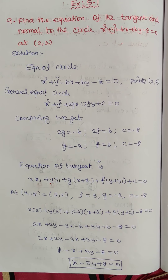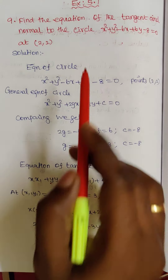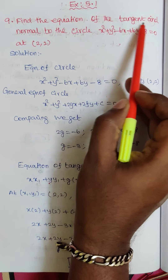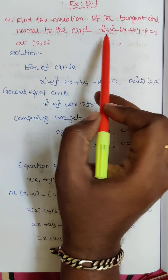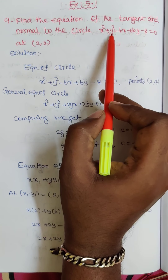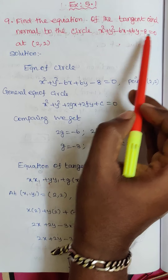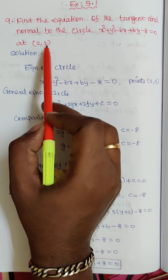Hi children, this is Dinesh here. Today we are going to discuss exercise 5.1, question number 9. Find the equation of the tangent and normal to the circle x squared plus y squared minus 6x plus 6y minus 8 equal to 0 at the point (2, 2).